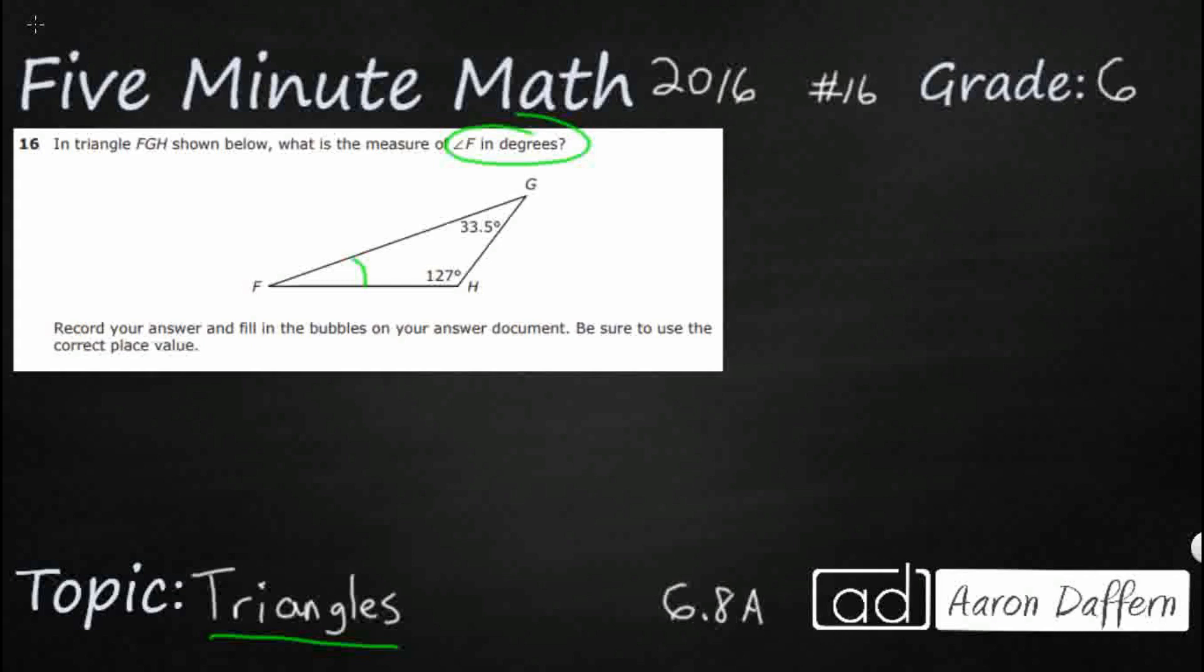Now here's the problem: there is no information in this problem itself that helps you solve this problem. If you know one little tiny thing, this is a cinch. And here's that hidden trick or that hidden piece of information. Triangles have an internal sum of 180 degrees.